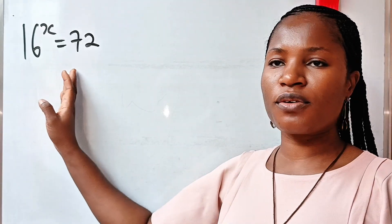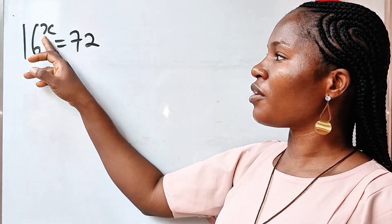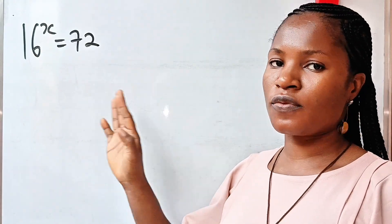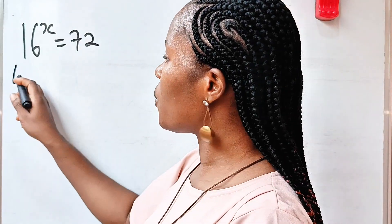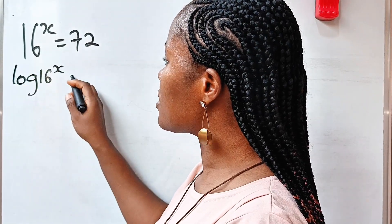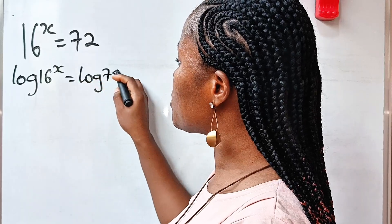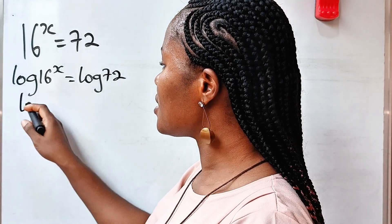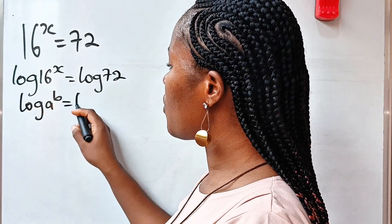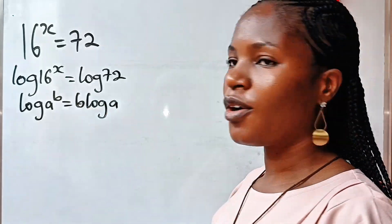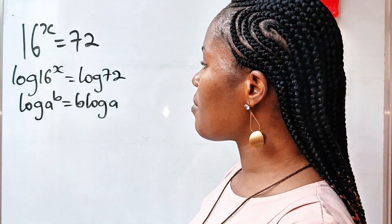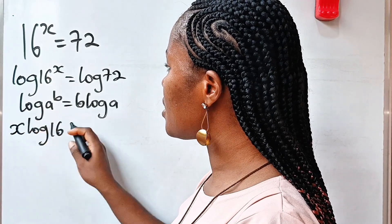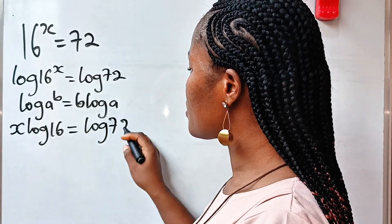Hi amazing friends, let's solve for the value of x. Since what we are looking for is our power, the only way to get the value is to introduce log to both sides of the equation. So we have log 16 raised to the power of x is equal to log 72. Now remember that log a raised to the power of b is equal to b multiplied by log a. So that means we can write this as x multiplied by log 16 is equal to log 72.